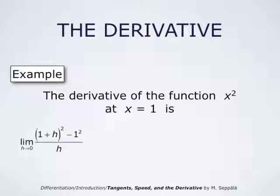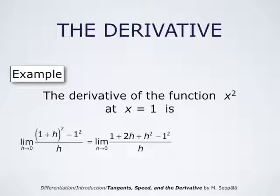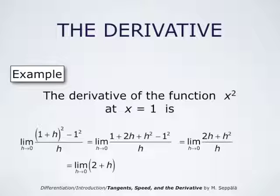The derivative of the function x squared at x equals one is easy to compute by the definition. It is the limit as h goes to zero of the quantity (1+h)² minus 1² divided by h. In the numerator the 1 and negative 1² cancel out because 1² is simply one. So we really have the limit as h goes to zero of the quantity 2h plus h² divided by h. h cancels out, and this is the limit as h goes to zero of 2 plus h. We conclude that this limit is two.